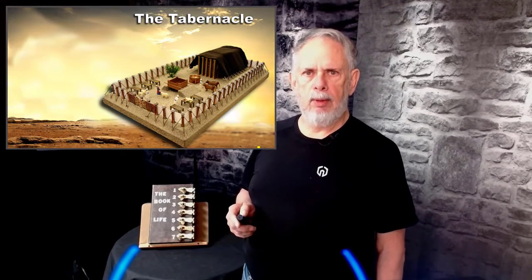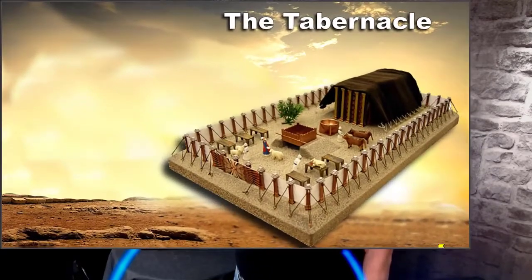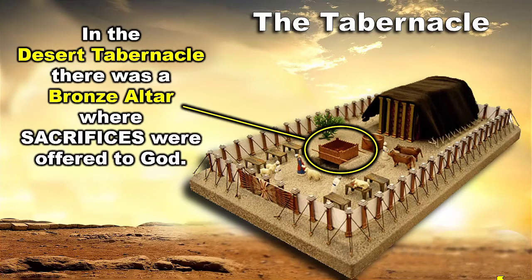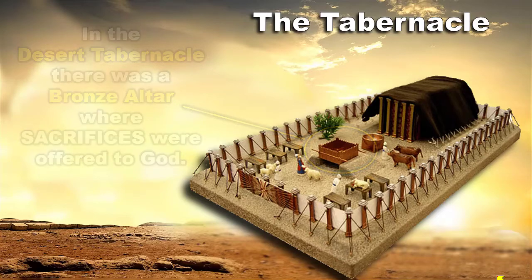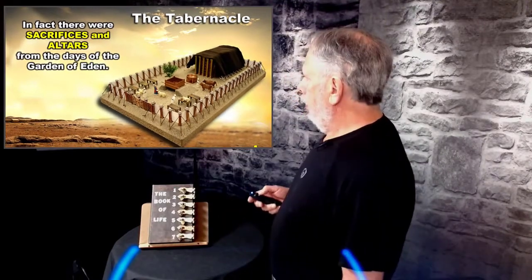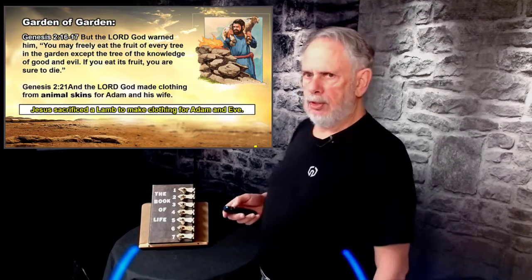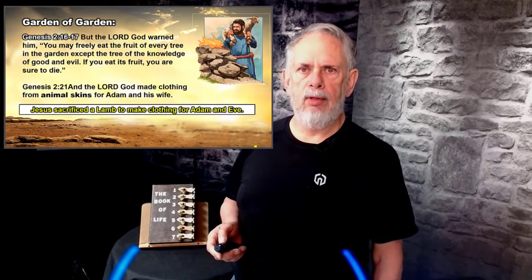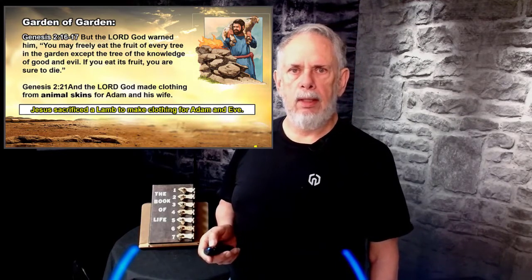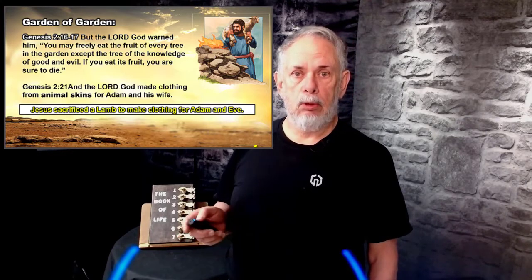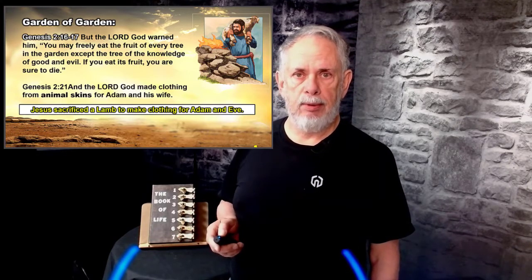The altar was in the courtyard and that's where the sacrifices were taking place — there were sacrifices and altars all the way from the Garden of Eden. We start off in Genesis 2:16-17: 'The Lord God warned you may freely eat of the fruit of every tree in the garden except the tree of knowledge of good and evil, and if you eat of that tree you will surely die.'